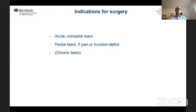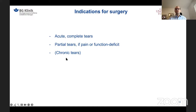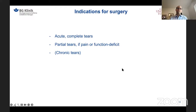Regarding indications for surgery: in all patients we aim for normal or near-normal supination force. In acute settings with complete tears, we proceed with surgery. In partial tears where pain does not resolve or there is a functional deficit, we also operate. In chronic tears, careful discussion with the patient is needed, as real chronic tears may require a tendon graft, which leads to much worse clinical results due to scarring and impaired tissue gliding. In those cases, conservative treatment may be considered.